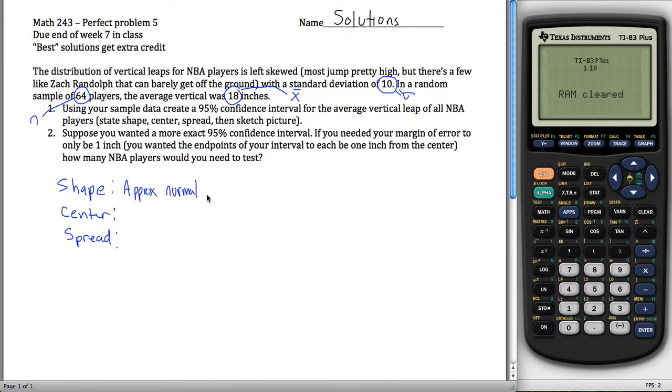The shape is approximately normal. Why is it approximately normal? Because my value for n is greater than or equal to 30. My value for n is 64. 64 is greater than or equal to 30. This is the central limit theorem here.